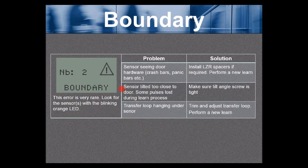The next most common problem, the sensors tilted too close to the door and some pulses were lost during the learn process. Make sure the tilt angle screw is tight. That's on the back side of the sensor. The next most common problem with the boundary error is a transfer loop hanging under the sensor. Trim and adjust the transfer loop and then perform a new learn.